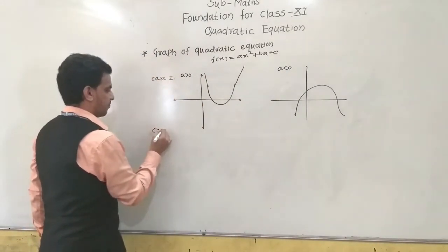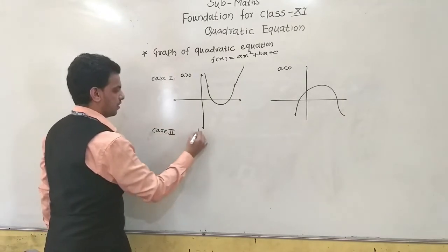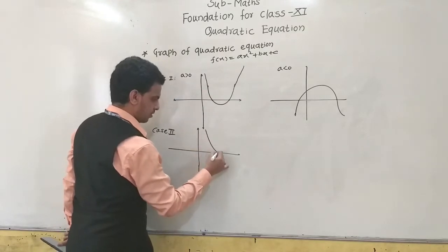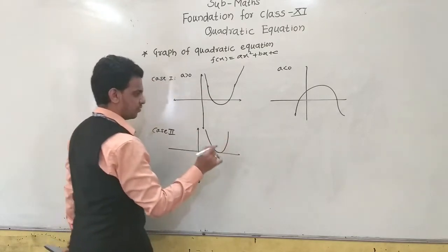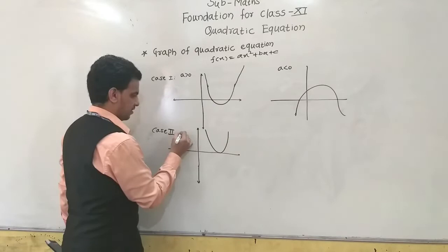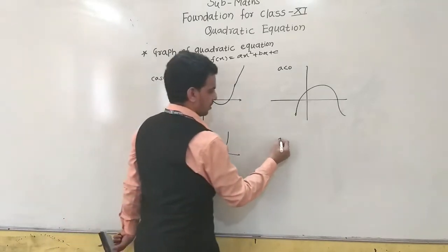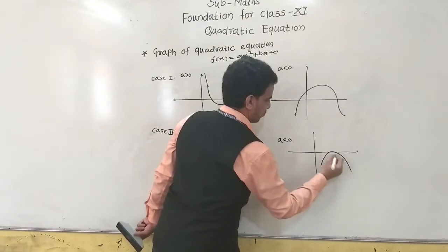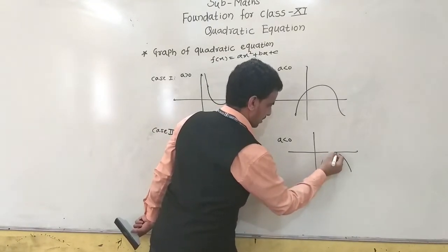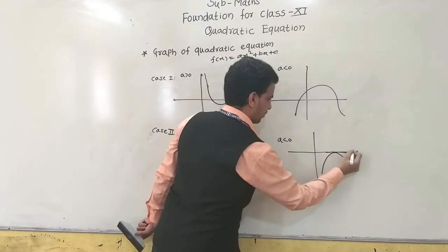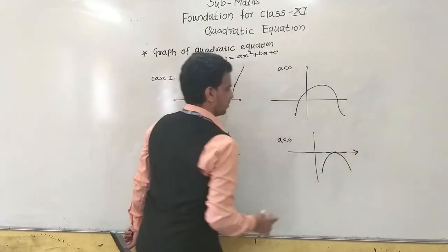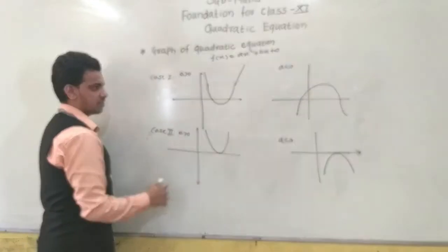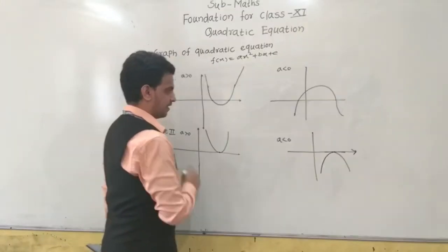Case 2: if the parabola cuts the x-axis at exactly one point (tangent to x-axis), again for both a > 0 and a < 0, the roots are equal (repeated root). This means the parabola touches the x-axis at exactly one point.